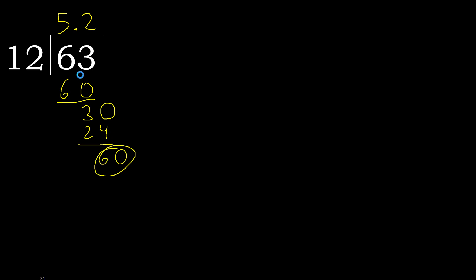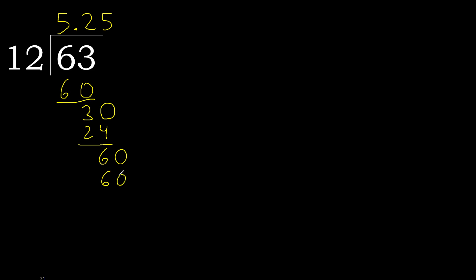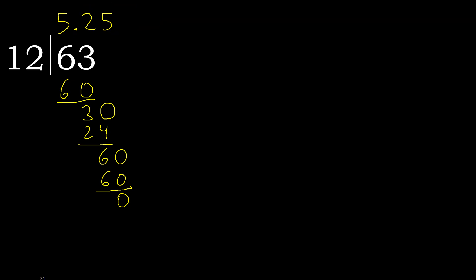Complete with decimal point. Bring down 0, giving 60. 12 multiplied by 5 is 60 — 60 is not greater. Subtract: 0. Therefore finished. 63 divided by 12 is 5.25.